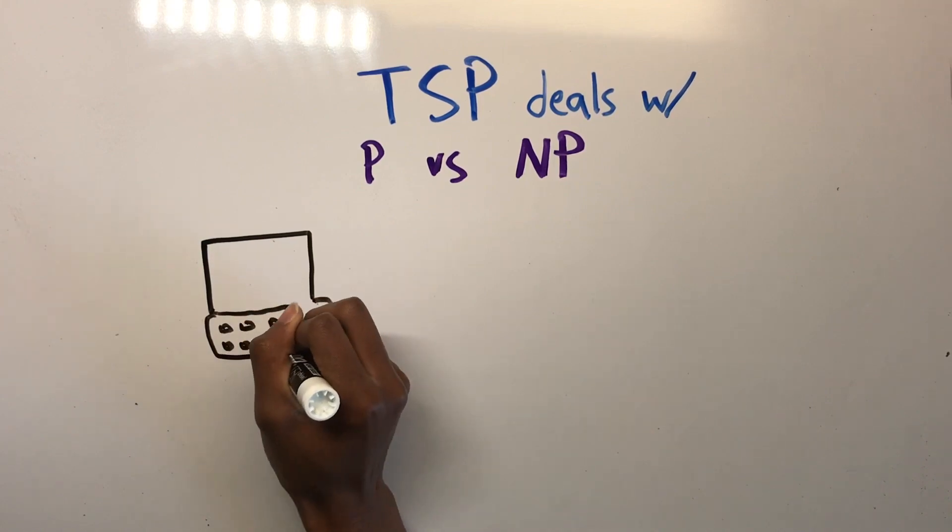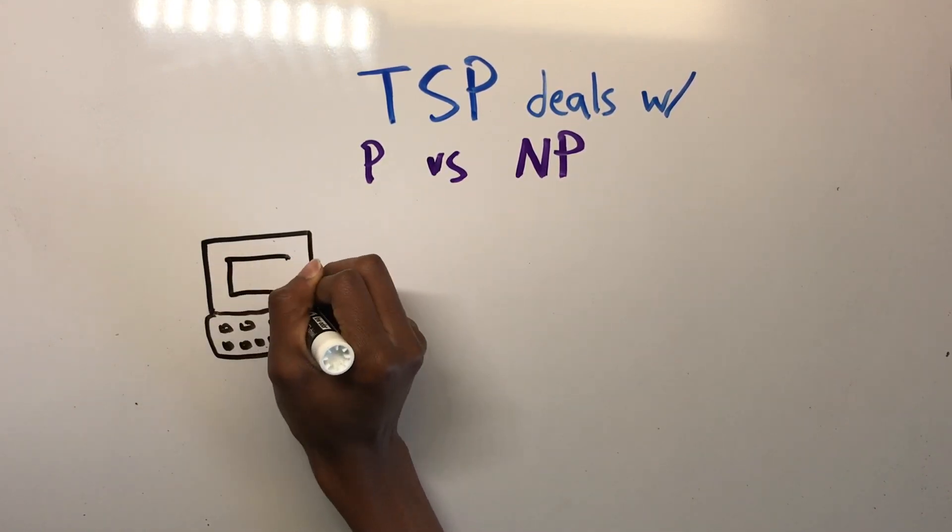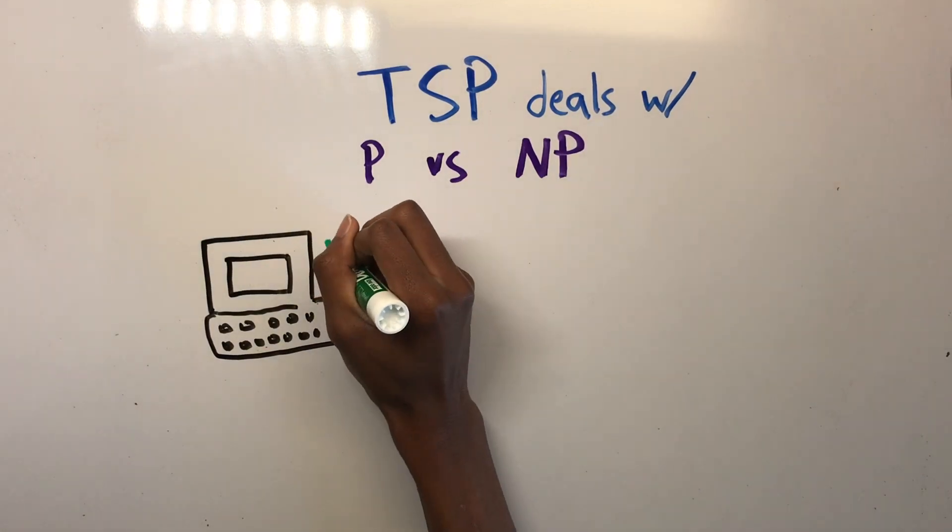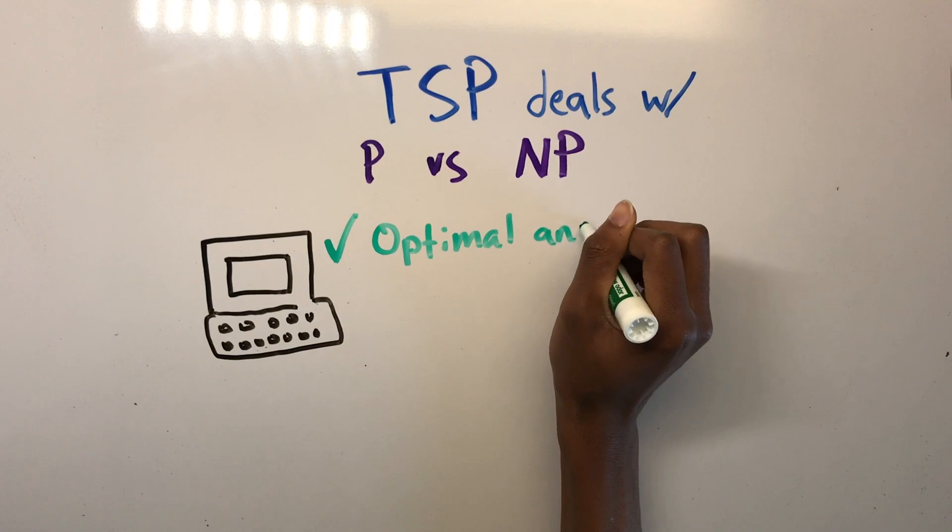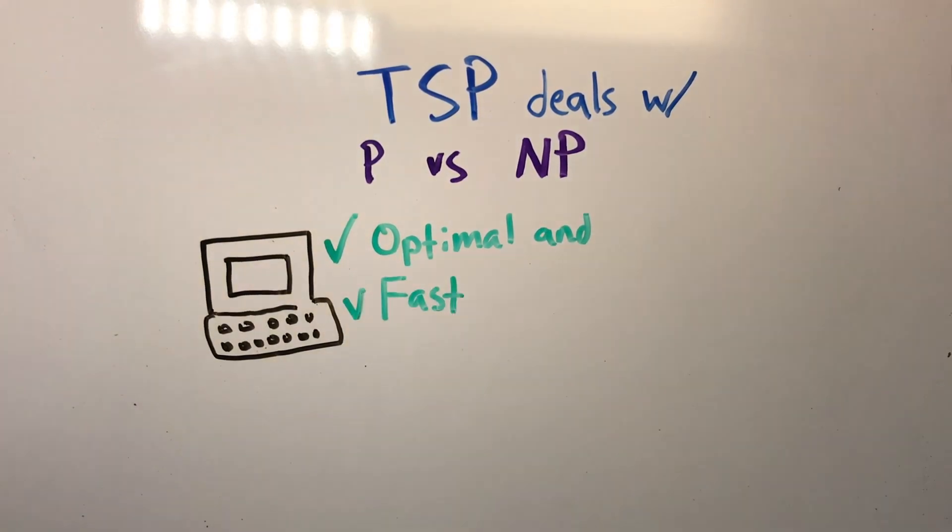When developing algorithms for the TSP, researchers look for two factors: efficiency and optimality. Is the algorithm able to find the solution fast and is it able to find the one correct solution, despite the amount of variables?